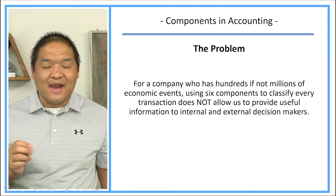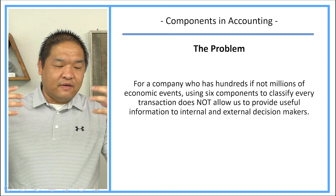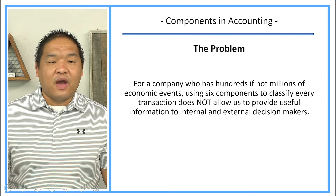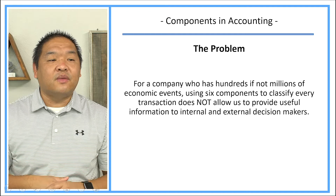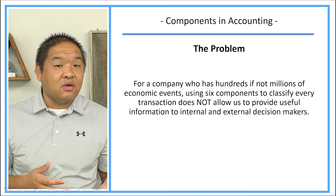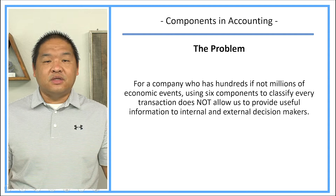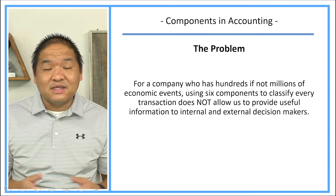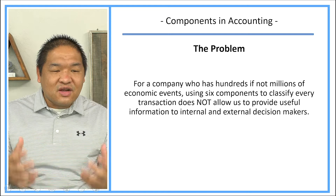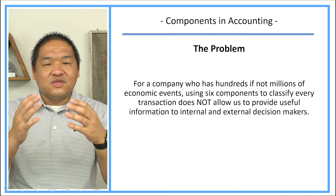Now, for companies who have hundreds, if not millions of transactions, using only six components to classify every transaction does not allow us to provide useful information to both internal and external decision makers. It's kind of like if I gave you a financial statement and all it had was assets, liabilities, owner's equity, expenses, revenues, and dividends — and I said our revenues were $25 million and our expenses were $15 million. You could do the math and see $10 million in profit, but what's the breakdown of expenses? Did we overspend on some categories? Just saying expenses were $15 million doesn't give you good information to make decisions, like how to decrease expenses to $10 or $12 million. We need to segregate transactions in finer detail than just those six components — and that's where accounts come into play.